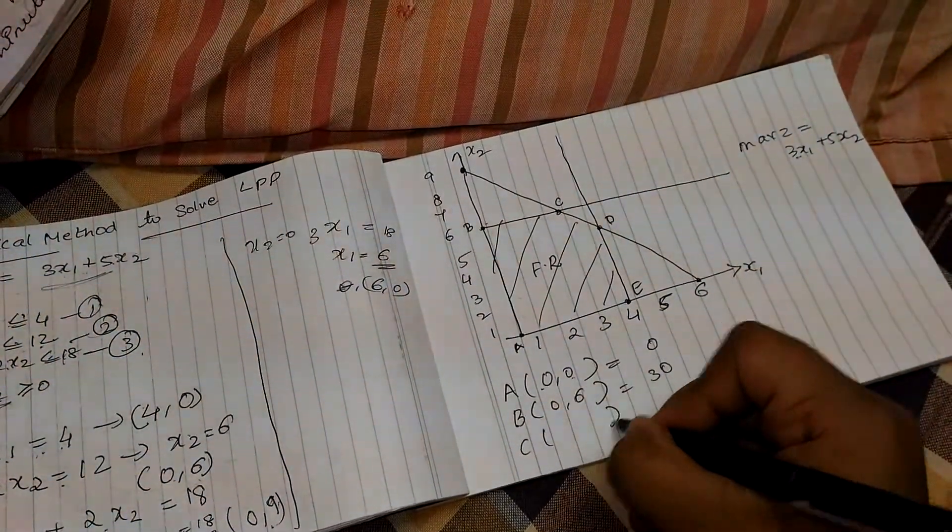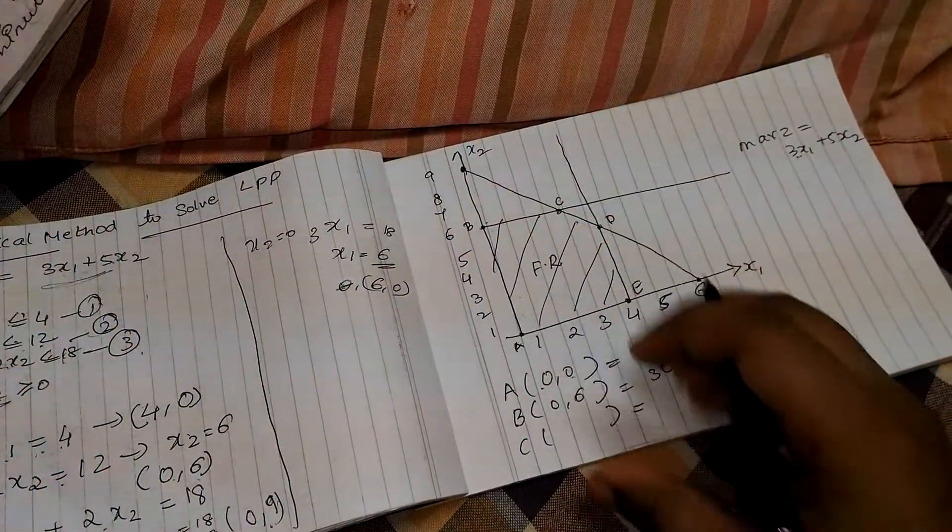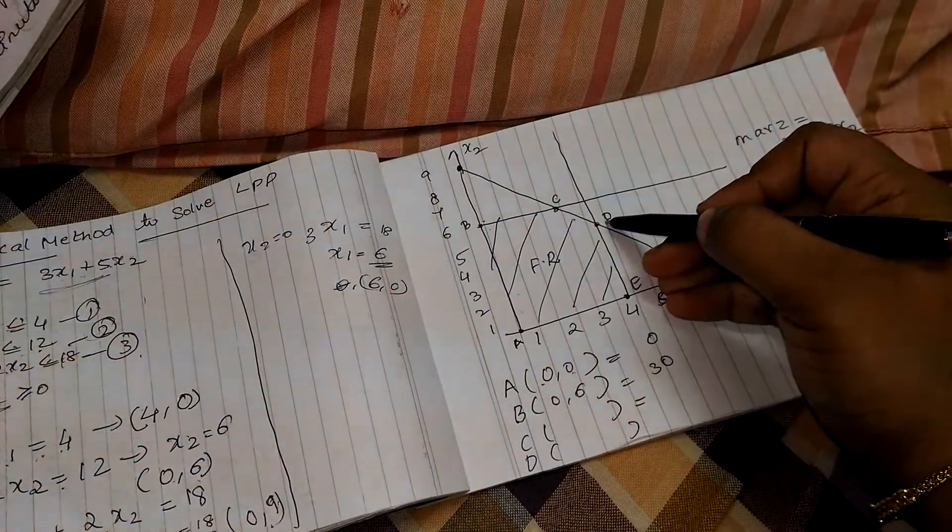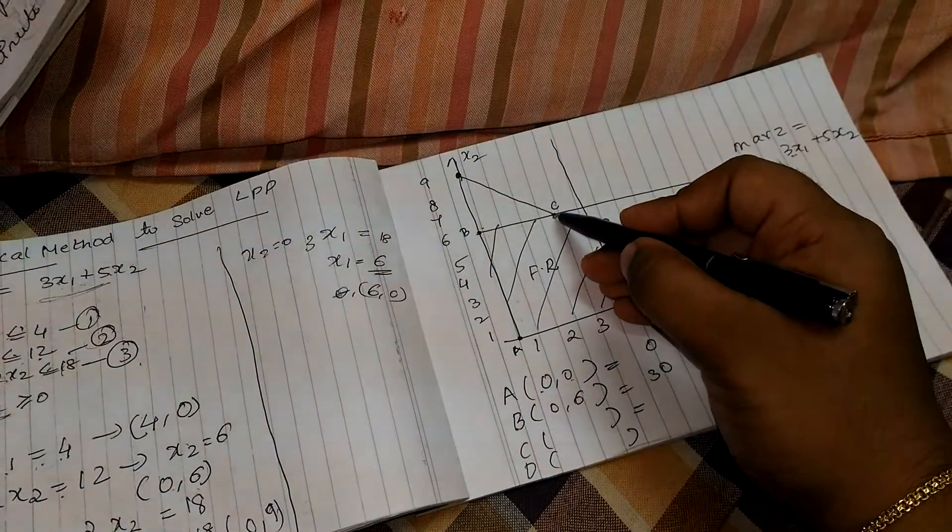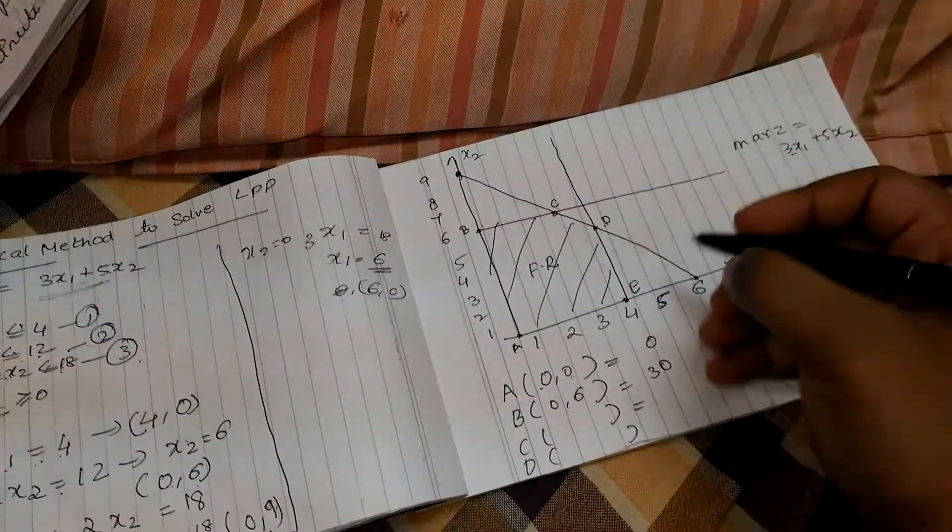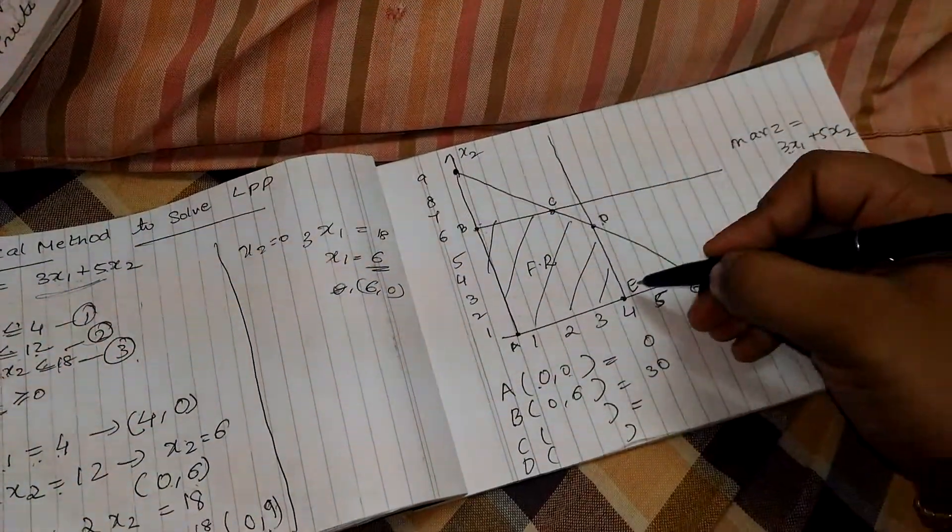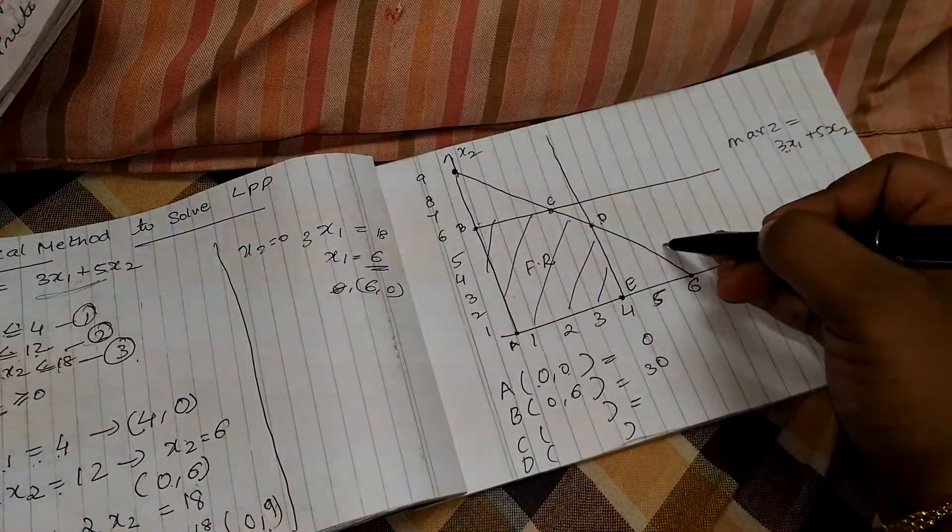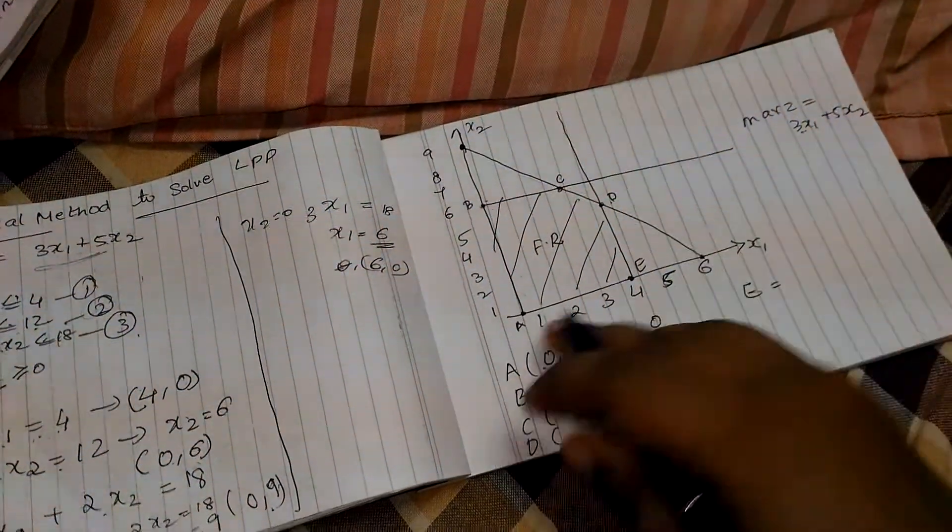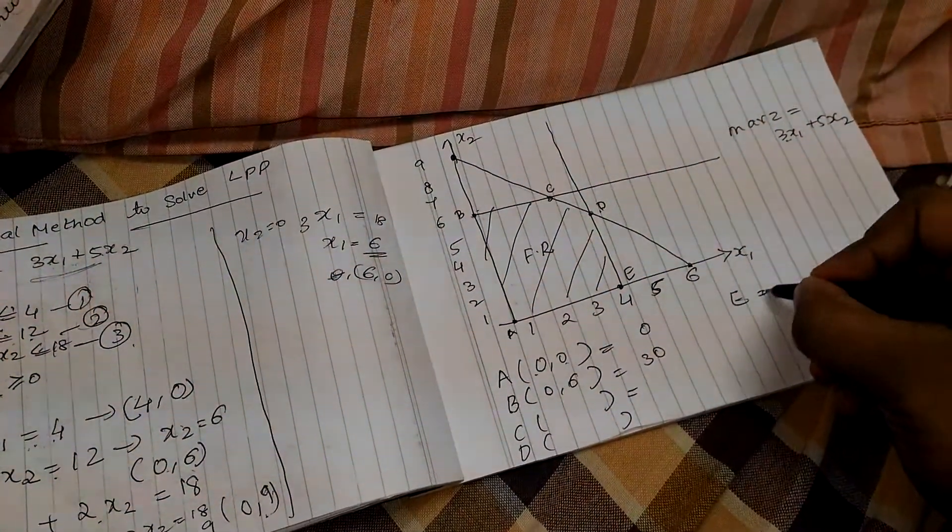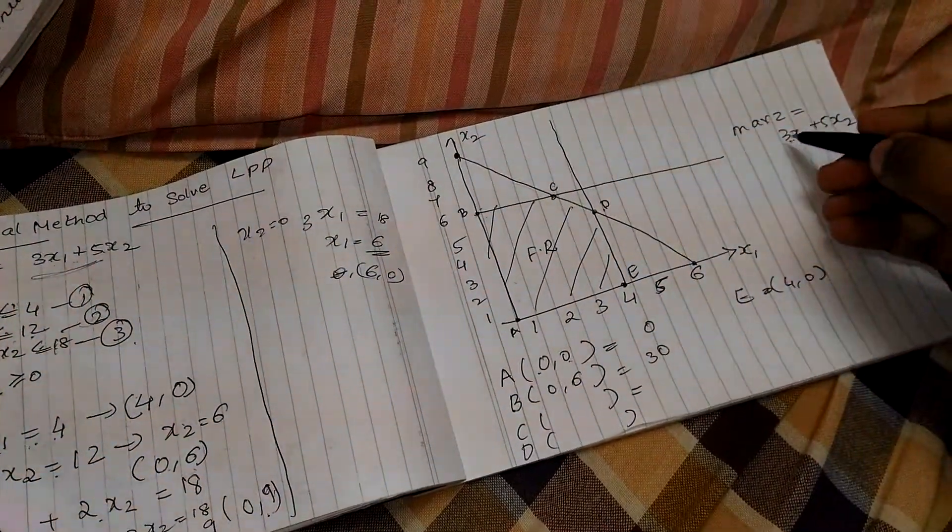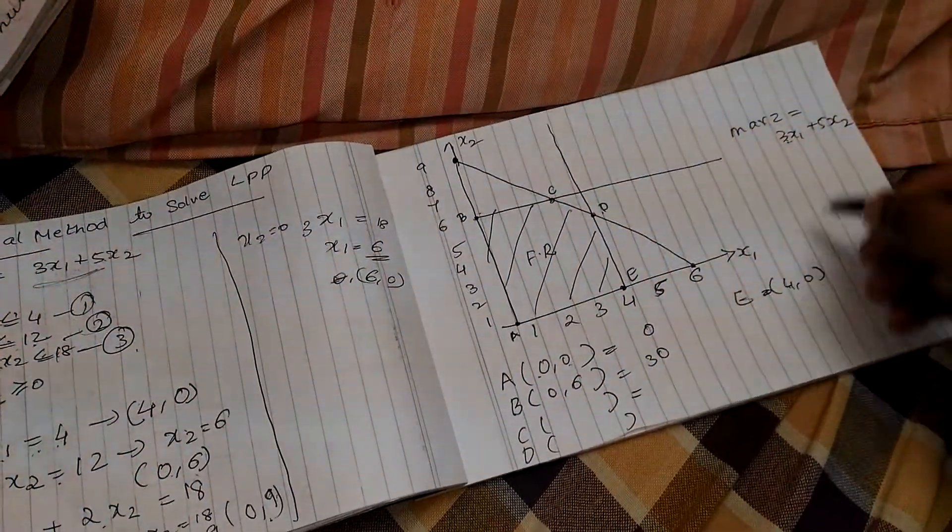And C value, we'll do it little later. And D. Here, to find C and D, I need to find the intersection value of this line and this line. And even for D, intersection of this and this. E value, we can find it directly. It is 4, 0. 4, 0. Substitute this value in this equation. So, 3 into 4 plus 5 into 0. It is nothing but 12.